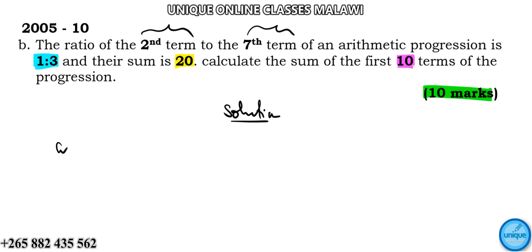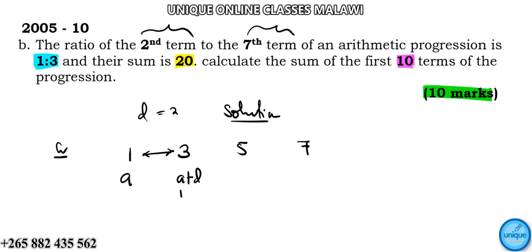In an arithmetic progression, 'a' is representing the first term and 'd' is the common difference. So this is the first term. Let's say we have terms one, three, five — the common difference here would be two. So what it means: if you have 'a plus d', like 'a' plus difference two, you would get the next term. Then 'a plus d plus d', which is 'a plus 2d'.